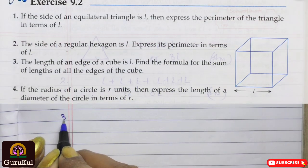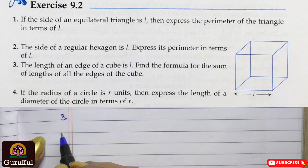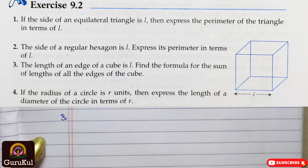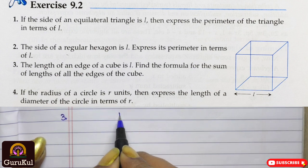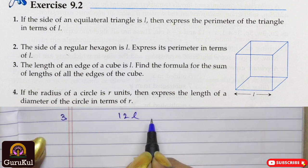Question number 3: the length of an edge of a cube is L. Find the formula for the sum of the length of all the edges of the cube. We all know that a cube has 12 edges and all of them are equal. Hence, in order to find the total length of the edges, we have to add them all. So it will be 12L.